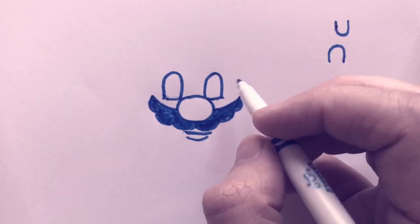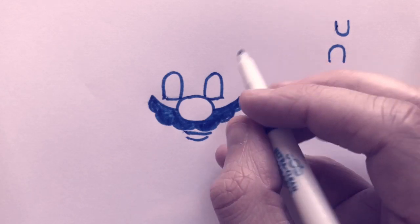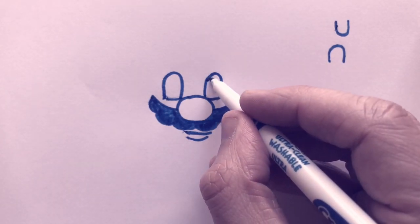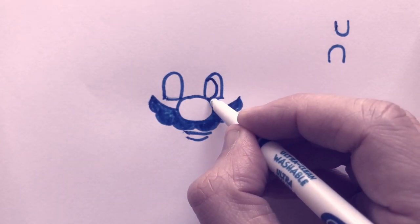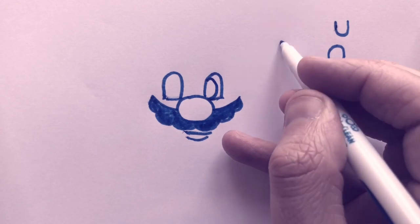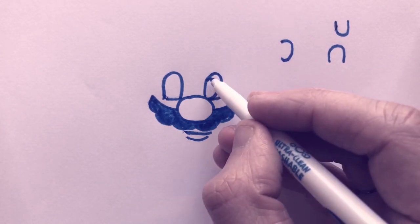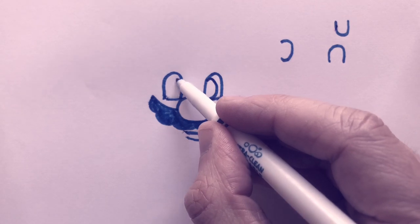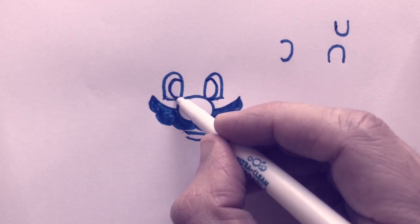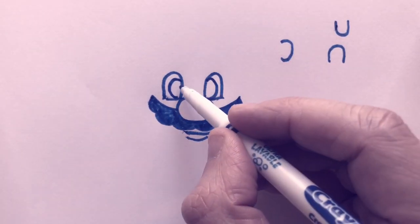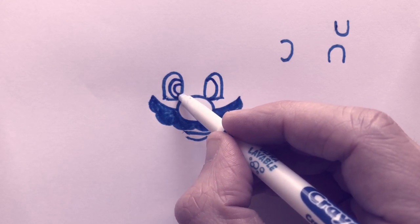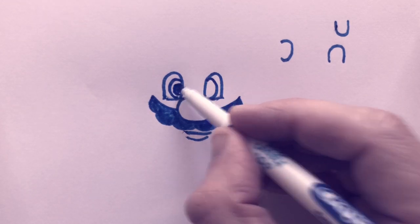Now we can do the insides of the eyes. We can do a letter C, backwards letter C like that, kind of coming into the eye there, and then a regular other letter C. Keeping the size the same, we do another one inside and shade that one in.